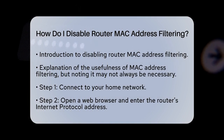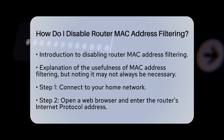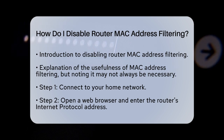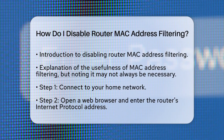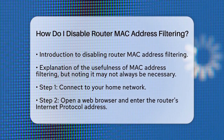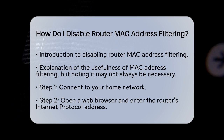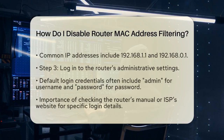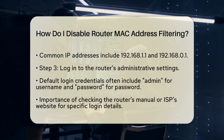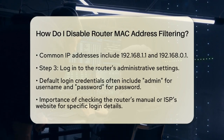First, you need to access your router's administrative settings. This is where you can control various features, including MAC address filtering. To start, connect to your home network. Open a web browser and type in your router's internet protocol address. This address is often printed on the router itself, or can be found in your device's network settings. Common addresses include 192.168.1.1 or 192.168.0.1.